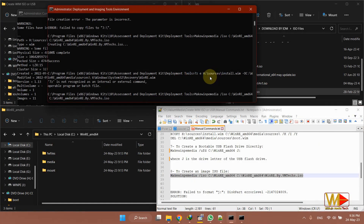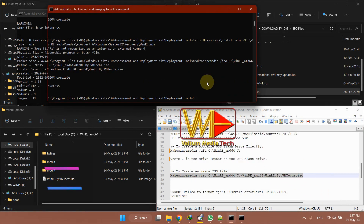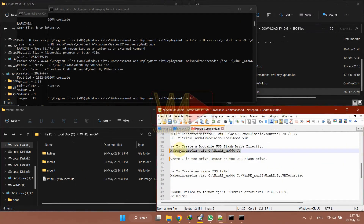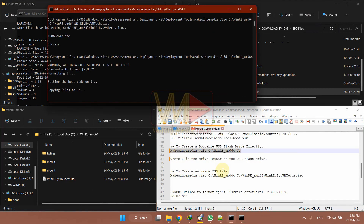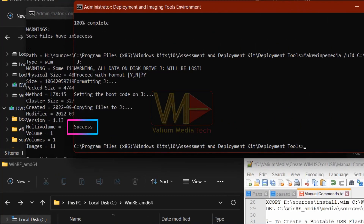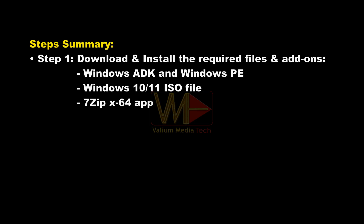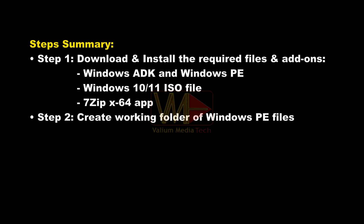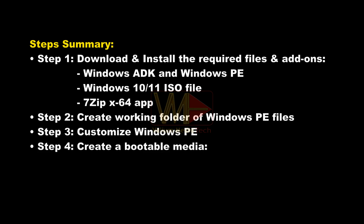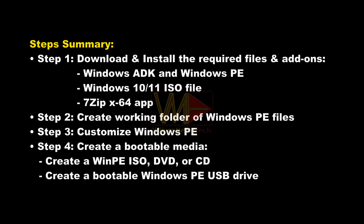Hello everybody. In this video, I will show you how to create an ISO file or a bootable USB drive of Windows Recovery or Windows Image using Deployment and Imaging Tools Environment. We can summarize the steps as follows: Step 1, downloading the required files and add-ons. Step 2, creating a working folder of Windows PE files. Step 3, customizing Windows Media. And Step 4, creating a bootable media, which could be either an ISO file or a bootable USB drive.